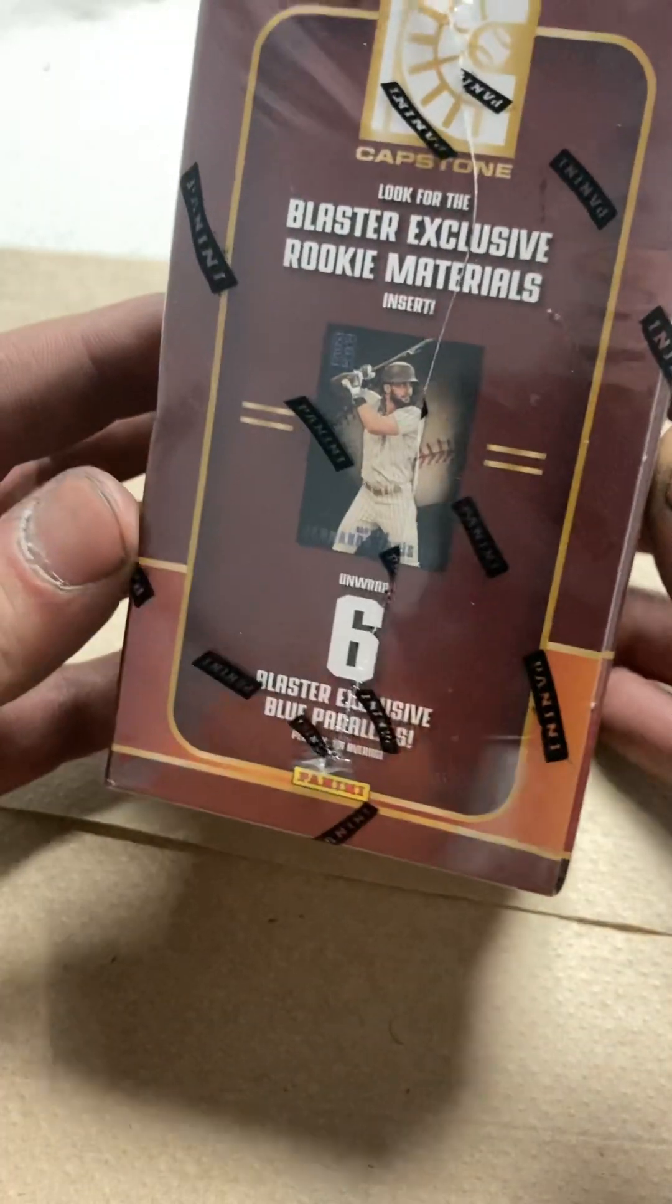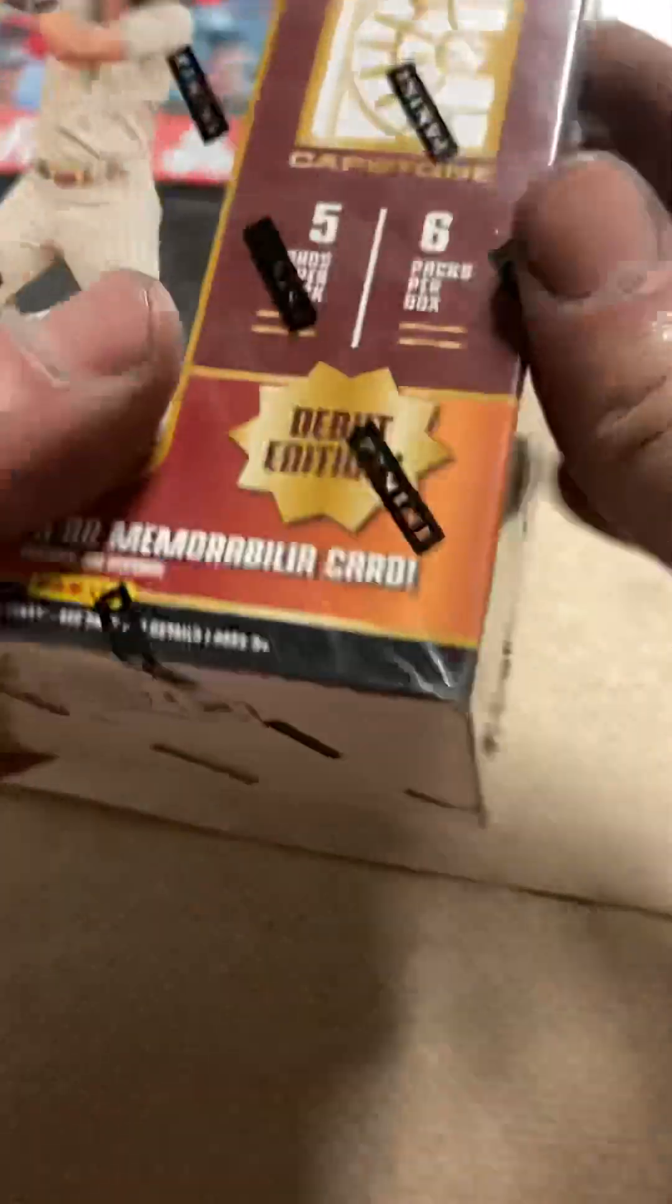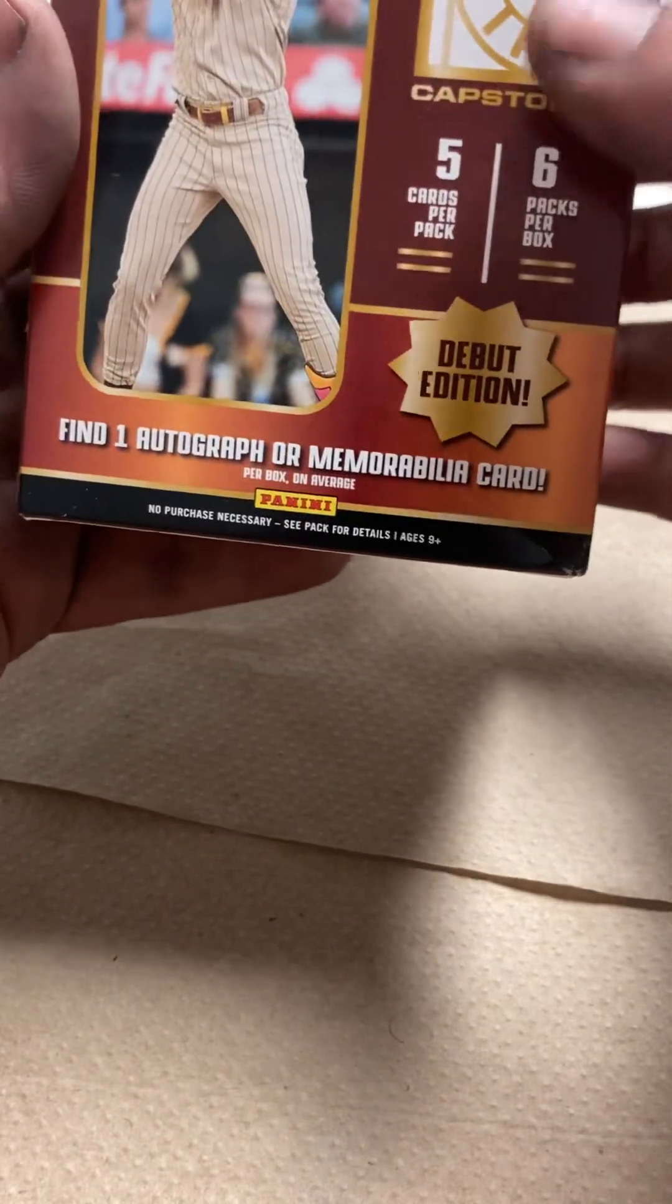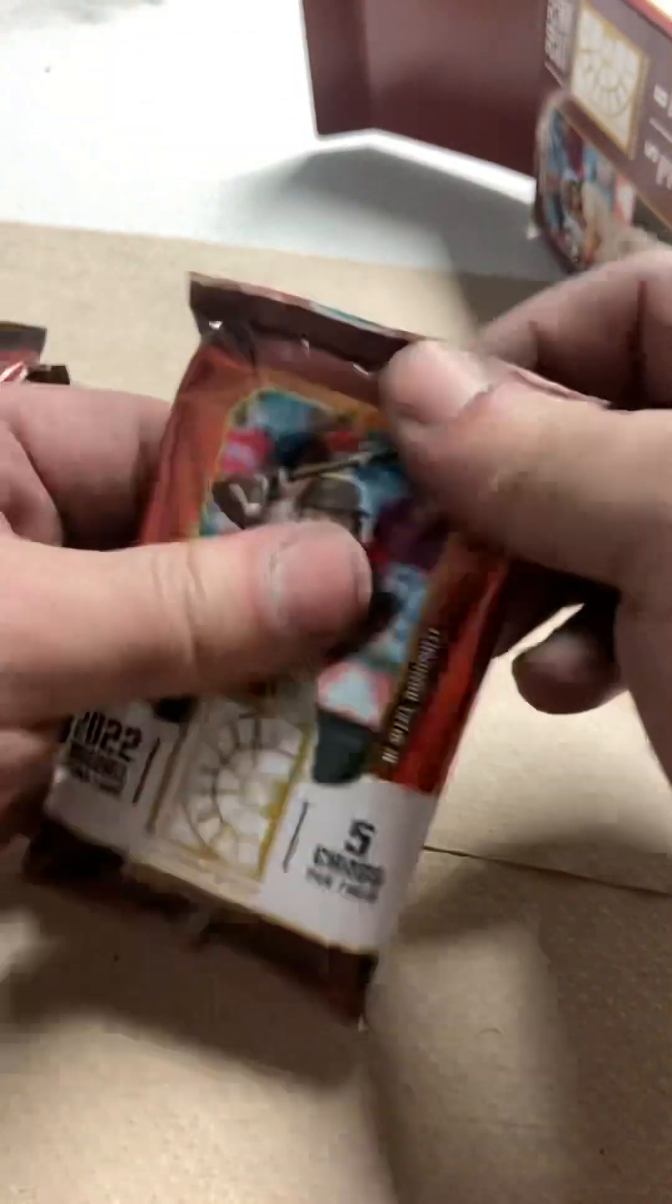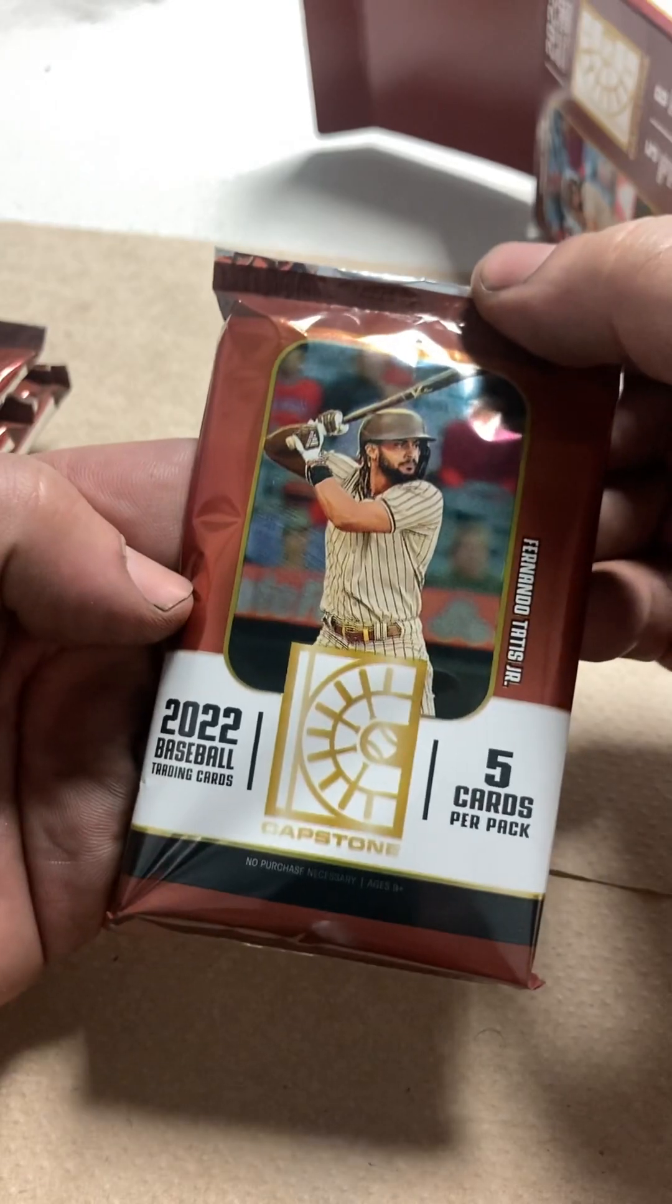Here's everything. Let's see what kind of interesting stuff you can find in a blaster. It says it comes with one autograph or one mem card per box on average. Hopefully this is not the on average this time. So I got your one, two, three, four, five, six packs right there. Panini Capstone.